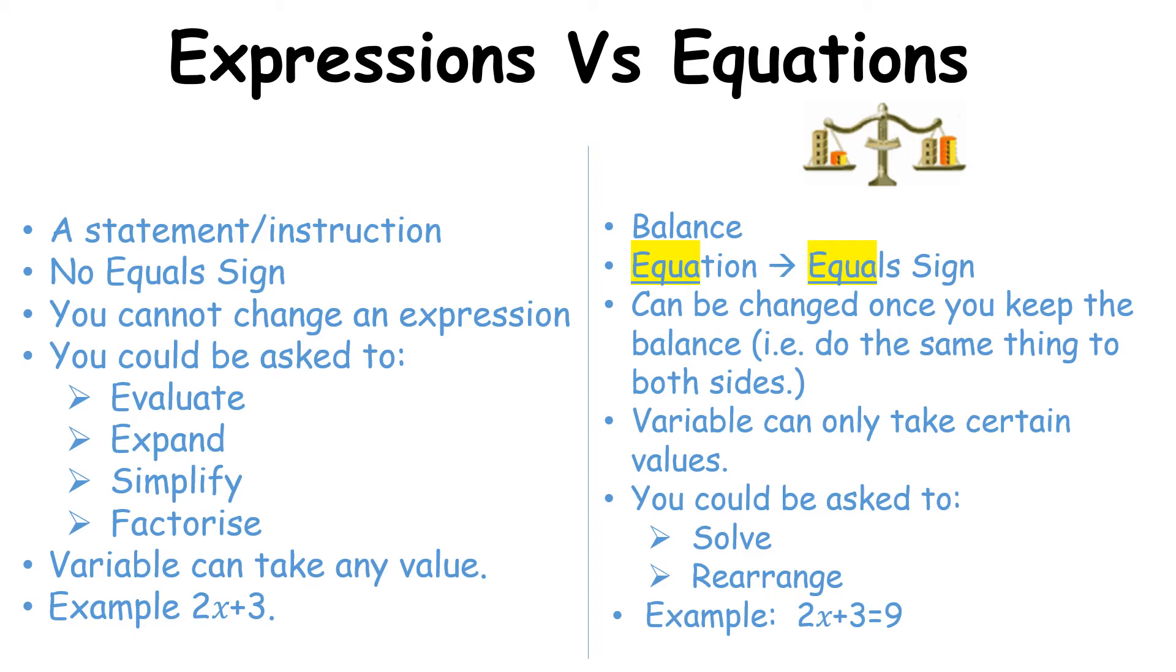Generally, we talk about variables and equations as taking certain values. So generally, we're asked to solve for the variable, to find the answer that works for that equation. Or you could be asked to rearrange. That's manipulation of formula. In some cases, in identities, we are given that an equation is true for all variables, and our focus then moves on to unknown coefficients.